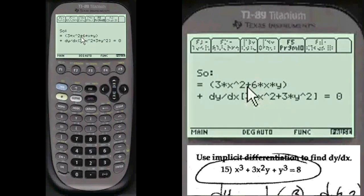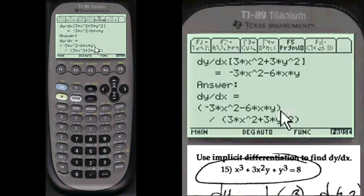And this is the equation here. You're separating dy/dx here into certain sections and keeping the other ones without dy/dx in another section of the equation. And so here's your answer: minus 3x squared minus 6xy. You write all this on your paper. You get an A in this problem.